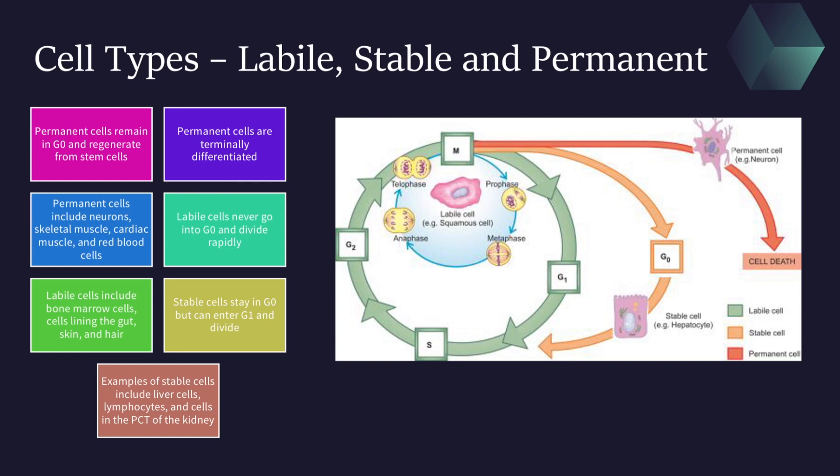To sum up: permanent cells cannot regenerate on their own and remain in G0 of the cell cycle. Labile cells never go into G0 and divide rapidly with a short G1. Finally, stable cells are in the middle — they are usually in G0, but can enter G1 and divide if needed.